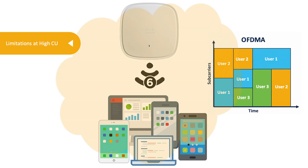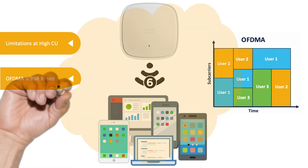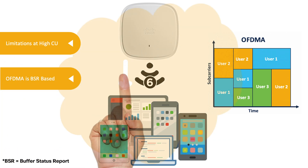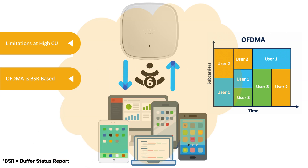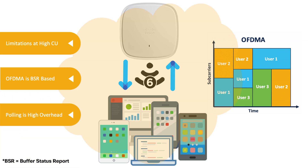The reason being, Uplink OFDMA is BSR-based, meaning the network must periodically collect buffer status reports from client devices to understand what data the client devices plan to send next. This method of polling is of high overhead and performs less effectively under highly congested RF environments.